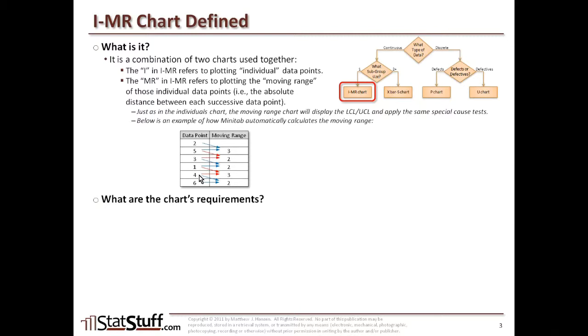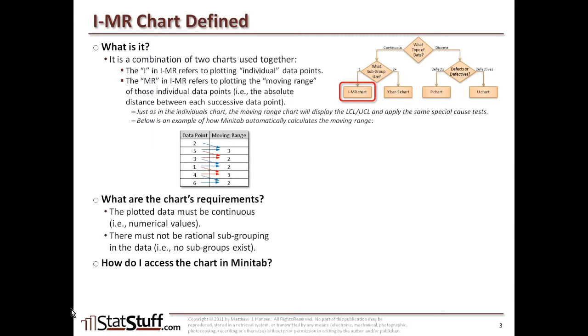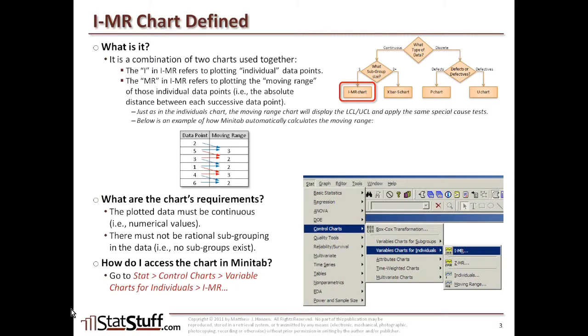So what are the requirements for the chart itself? Well, the plotted data that we're using should be continuous data, as they should be using numerical values. And there shouldn't be any rational subgrouping in the data. That is, there shouldn't be any subgroups that already exist in it. So for accessing it within Minitab, this is where you go to the stat menu, select control charts, then variable charts for individuals, then choose IMR.